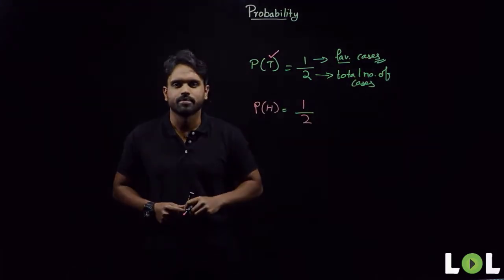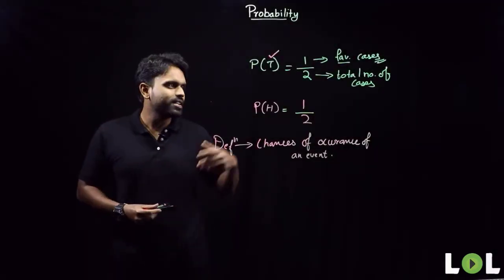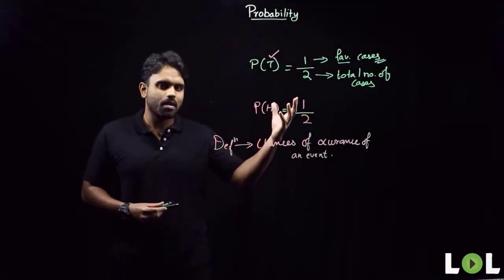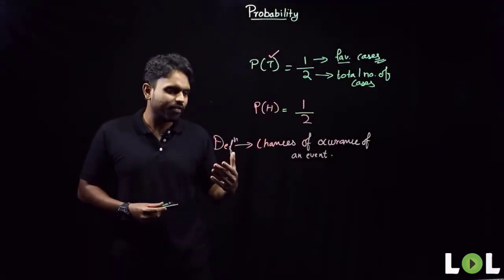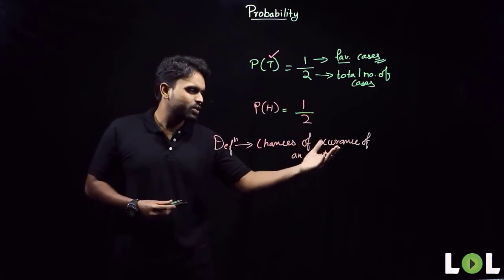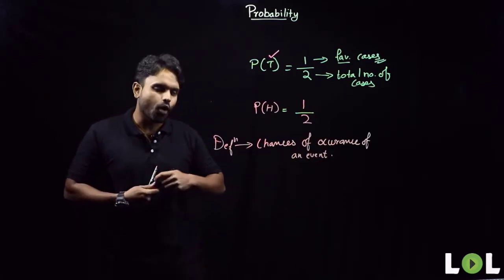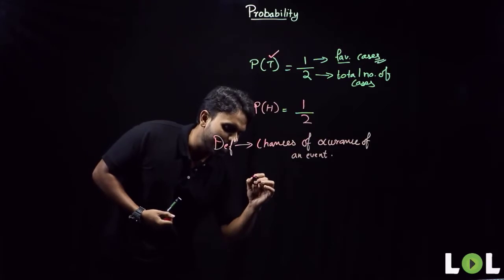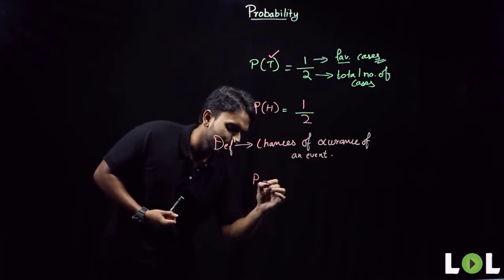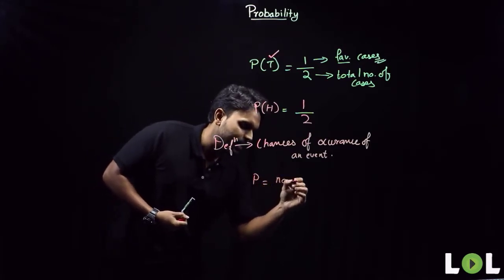From this understanding, we can define probability as the chances of occurrence of an event. The formula for probability is: number of favorable cases upon total number of cases.